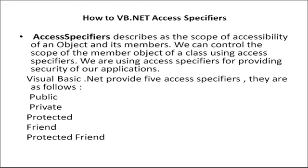We are already aware of the Access Specifier which we have used previously to get the color of class and object. So again we will see the same. Access Specifier is described as the solution of accessibility of members. Access Specifier describes how the class or data members can be accessed.